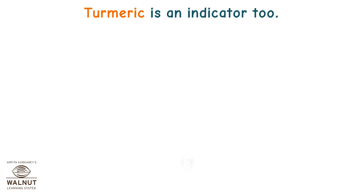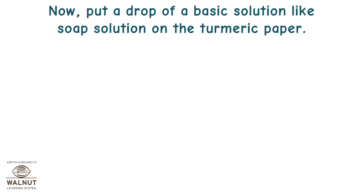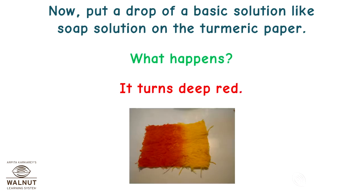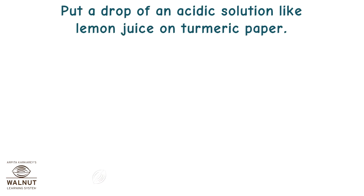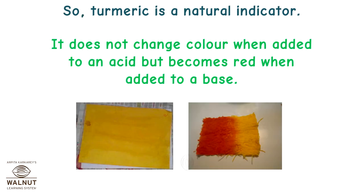Turmeric is an indicator too. You can make turmeric paper by putting a turmeric paste on filter paper and then drying it. Now, put a drop of a basic solution like soap solution on the turmeric paper — it turns deep red. Put a drop of an acidic solution like lemon juice on turmeric paper — nothing happens, there is no colour change. So turmeric is a natural indicator: it does not change colour when added to an acid but becomes red when added to a base.